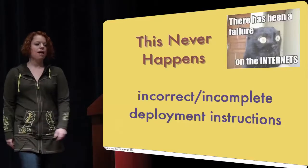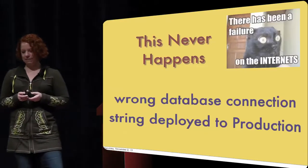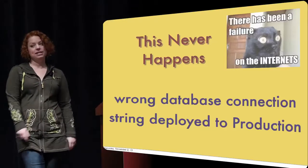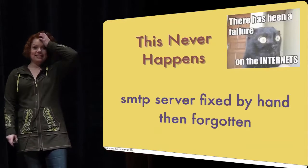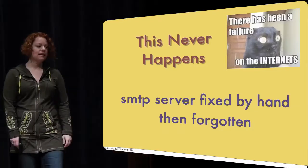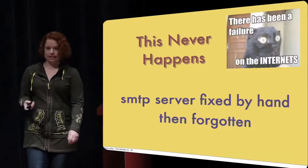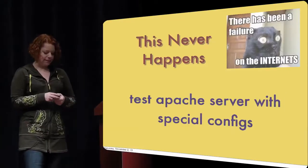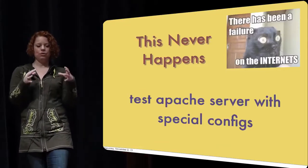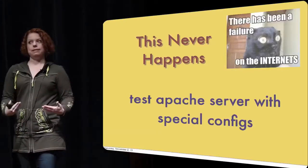Another thing I've seen several times: the wrong database connection information is deployed to production, or a dev password for something ends up in production instead. 3 a.m. outages — no fun for anybody. Somebody fixed an SMTP server setting on a server by hand and then forgot about it, so when a new server is built a couple of weeks later, that server also has the wrong SMTP server setting until somebody comes in and fixes it by hand again — and we keep forgetting to do this over and over.